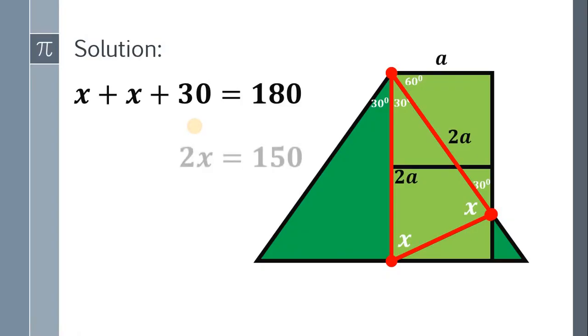Combine similar terms and we get 2x equals 150. Divide both sides by 2, we get x equals 75. Therefore, the missing angle a while ago is simply 75 degrees.